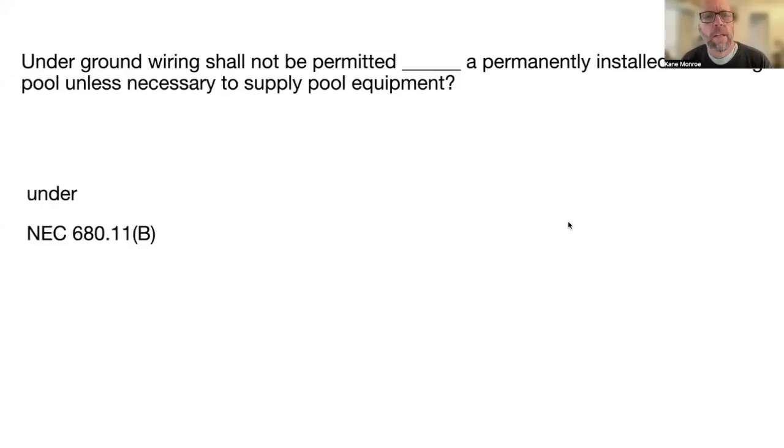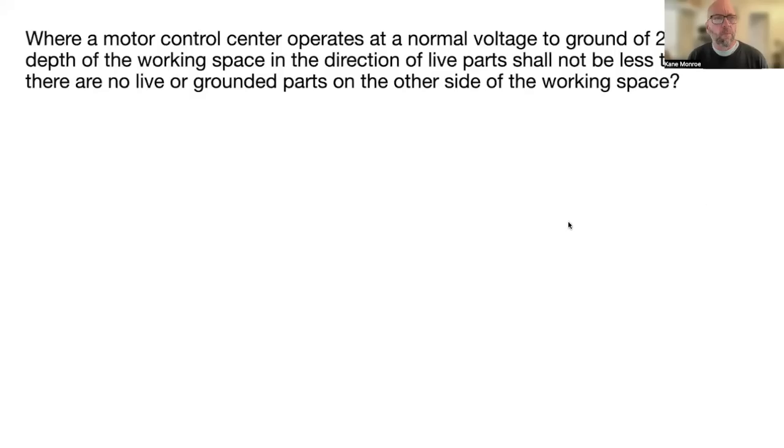Where motor control center operates at a normal voltage to ground of 277 volts, the depth of the working space in the direction of the live part shall not be less than blank if there are no live or grounded parts on the other side of the working space. 36 inches or three feet. Table 110.26a1 condition number one will get you that.